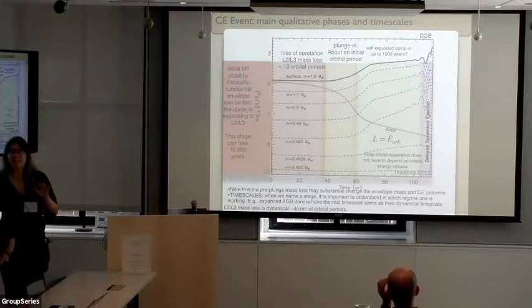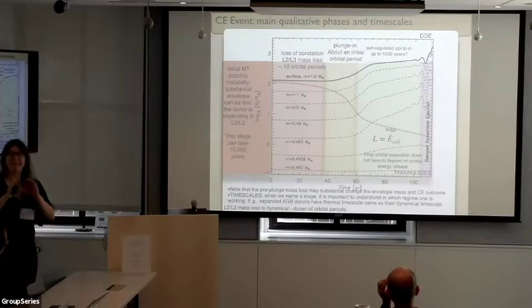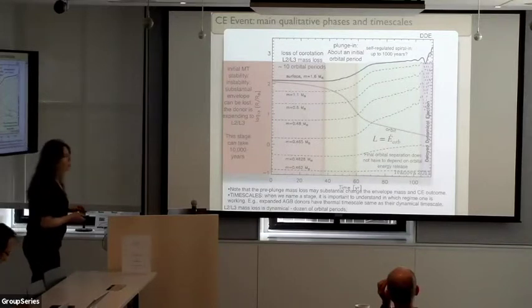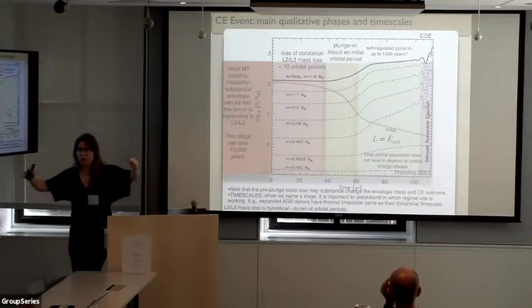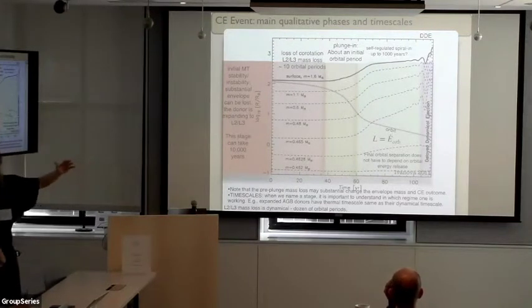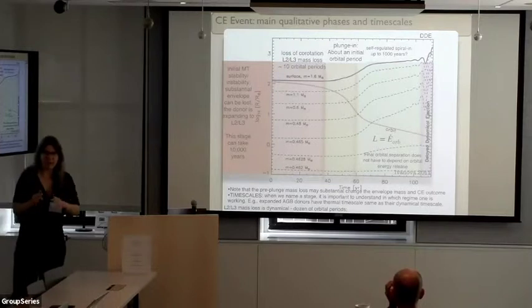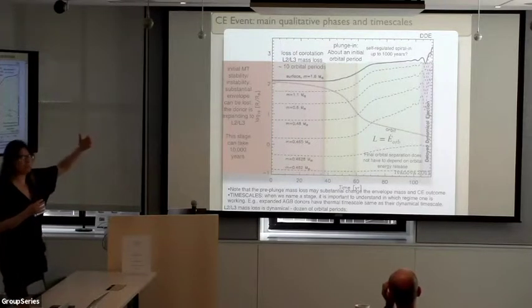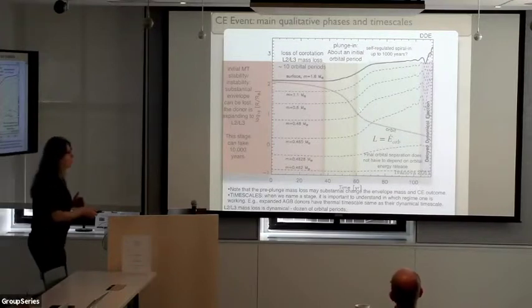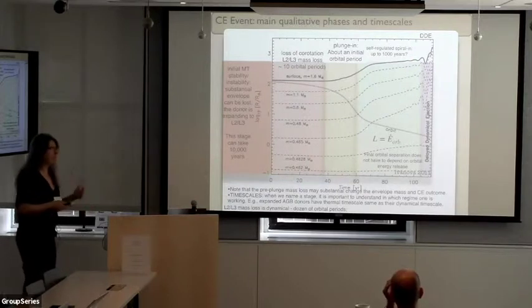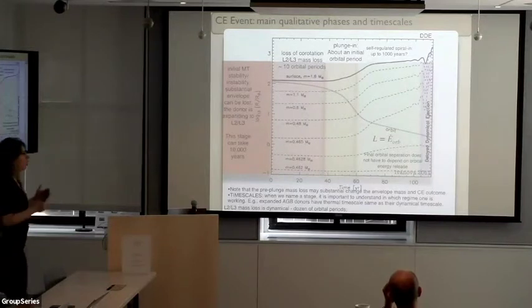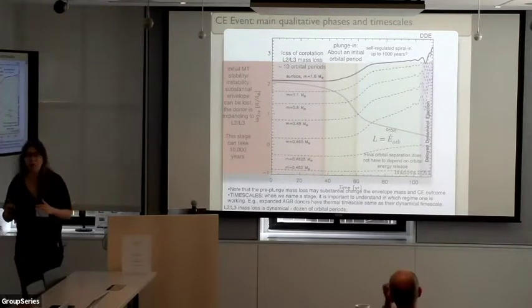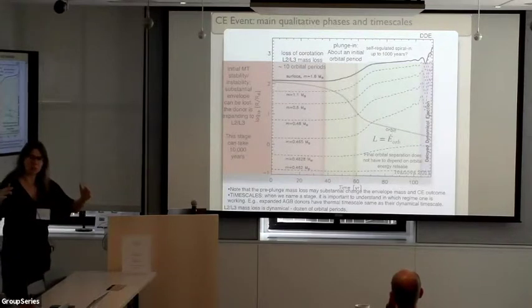The plunging phase is usually the stage best suited for simulation because it's dynamical — you can neglect most other physics except mechanical energy. However, once the envelope expands and most of the mass sits a little above six times the current orbital separation, the forces the binary can exert on the expanded envelope diminish. The orbit and the expanded envelope decouple. At the same time, as was noted in 1979 by Paczynski, you may move into a regime where orbital shrinkage becomes comparable to the rate at which the envelope can lose energy from its surface.